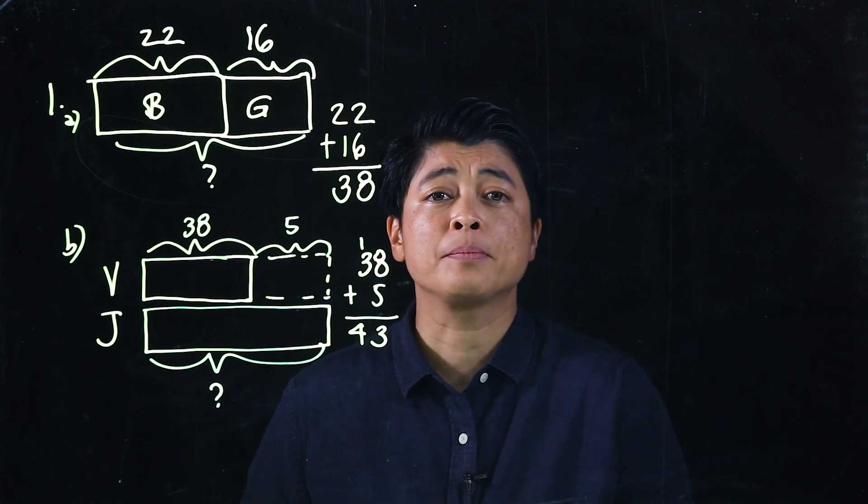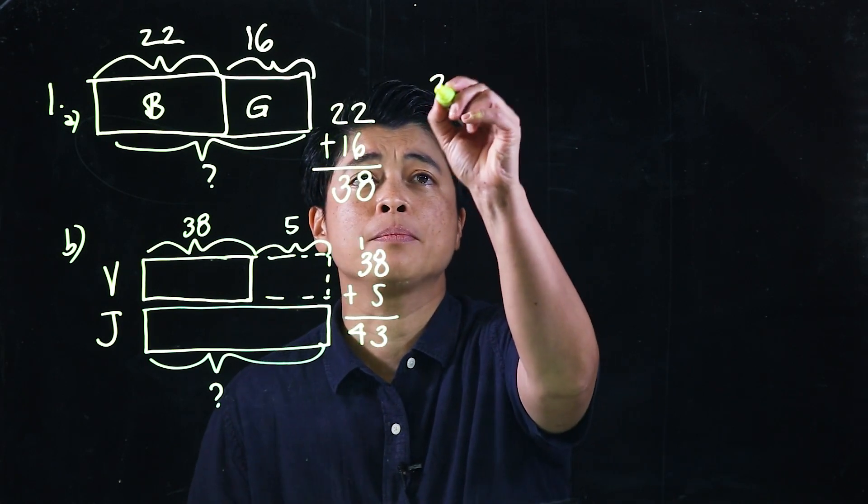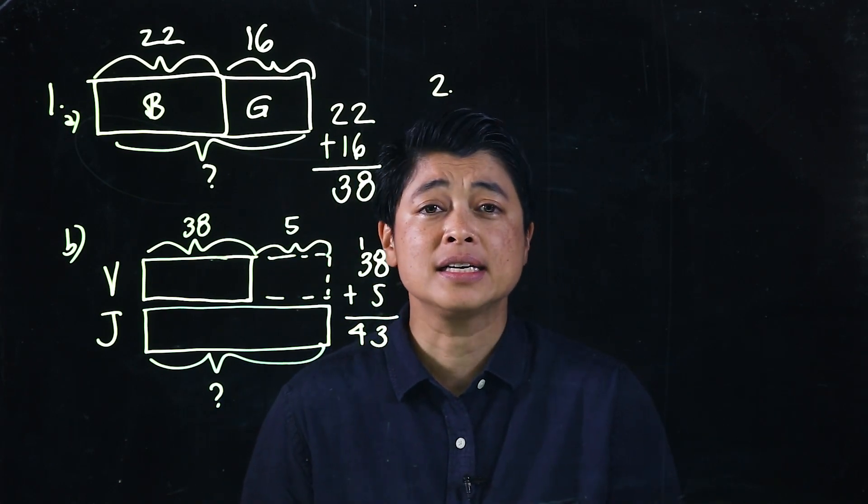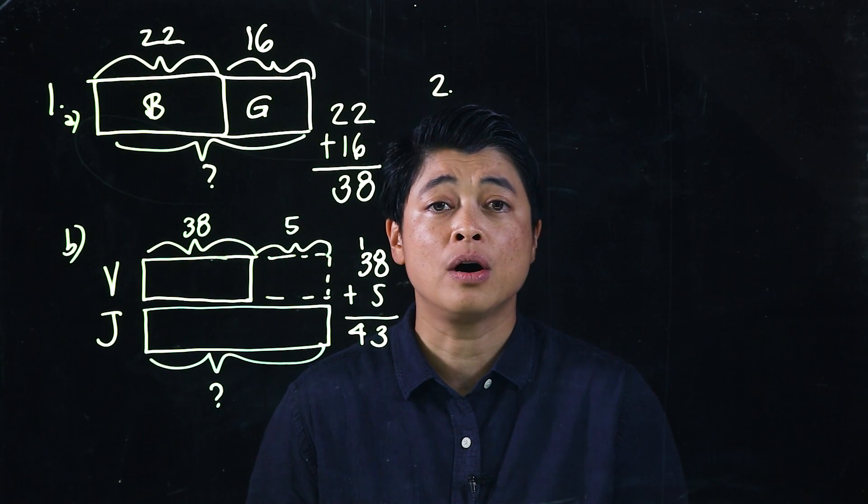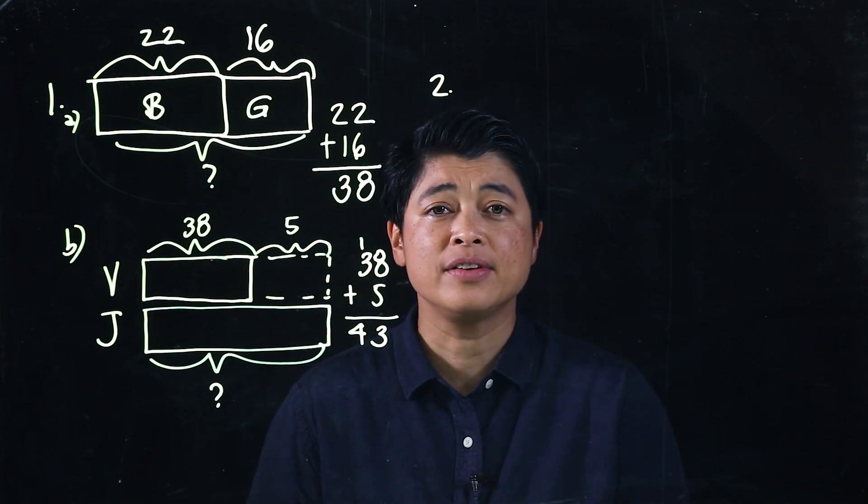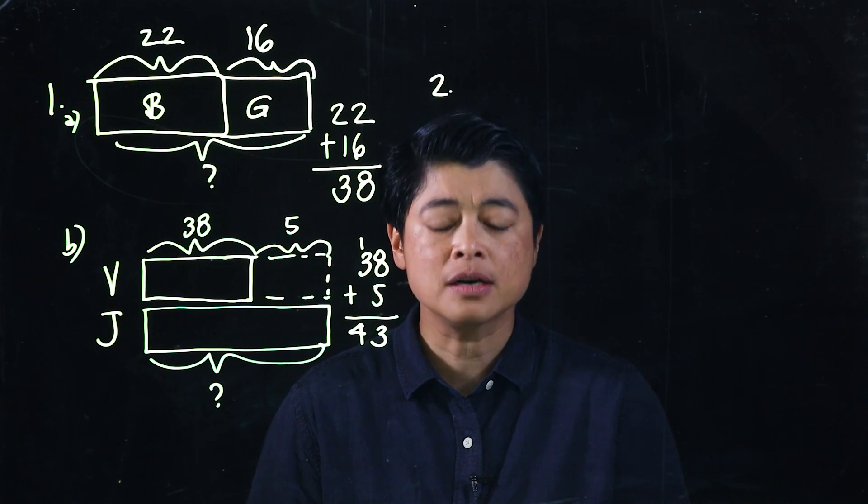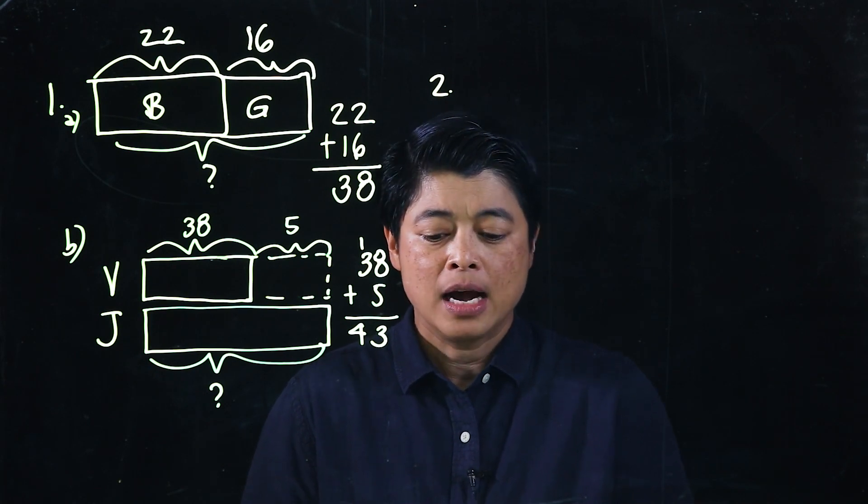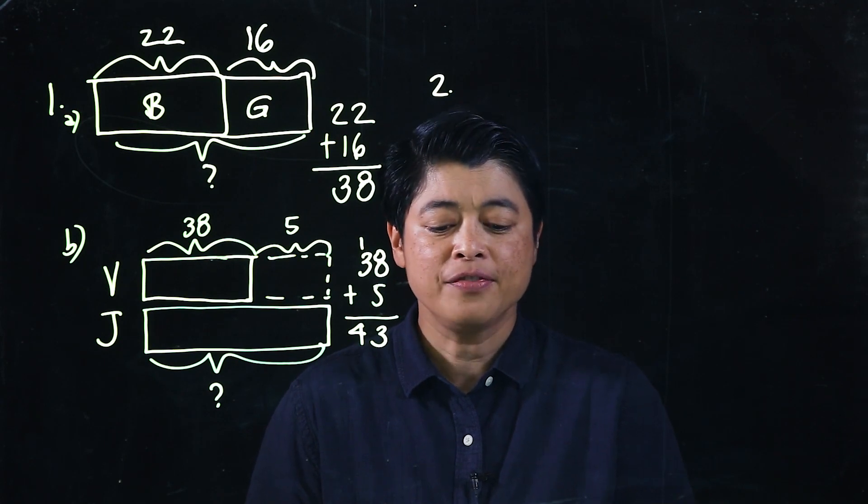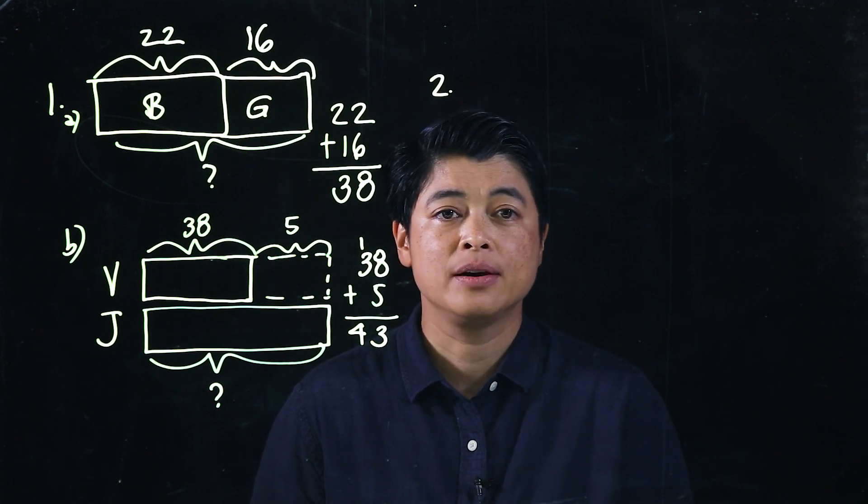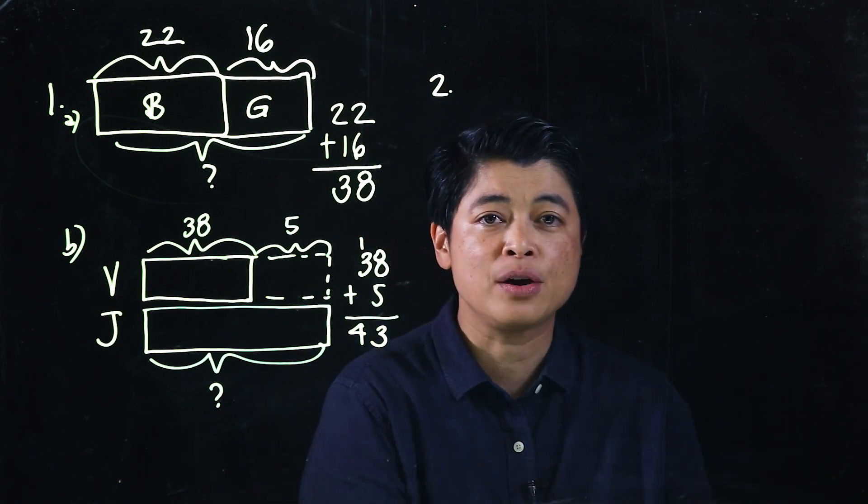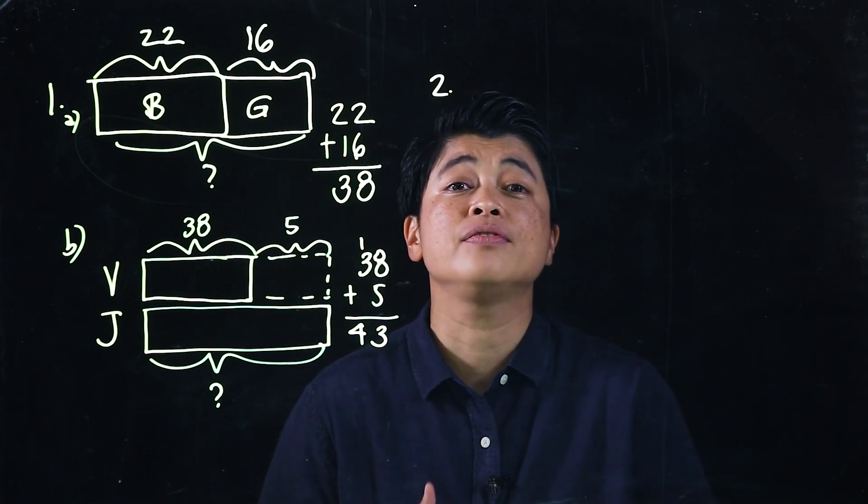The second problem that we will do is problem number 2. In problem number 2, it says Mr. Nang had a 620-meter long fence. His fence was 279 meters longer than Mr. Chang's. What was the total length of the fences together?